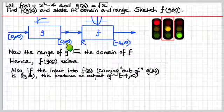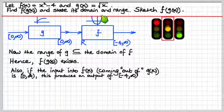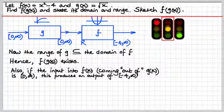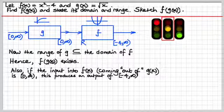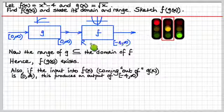then this is going to produce an output in the second function of, if you look up here, from minus 4 to infinity. So we've just identified that the domain of this composite function is this, the left-hand end, and the range of it is this, the right-hand end. And everything's compatible in here, so everything's beautiful.